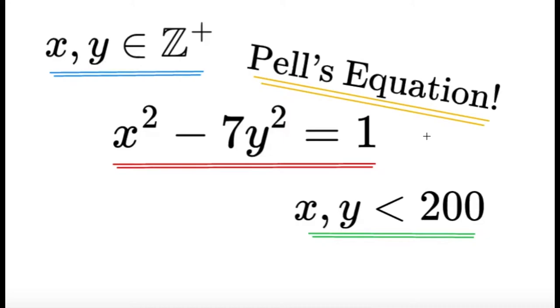Hello, hello, it's Dumplet here. Here's an item on number theory. x and y are positive integers such that x squared minus 7y squared equals 1. Find all positive integer ordered pairs x comma y, where x and y are less than 200.